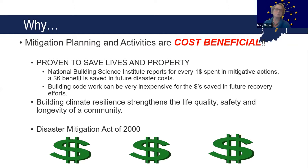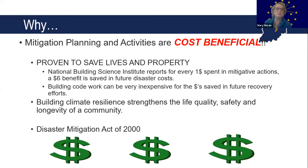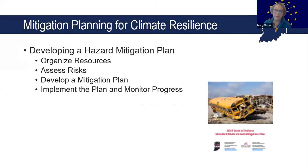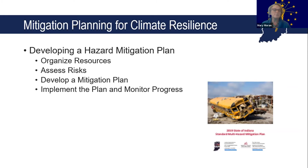As Janet mentioned, the Disaster Mitigation Act 2000 requires a local mitigation plan to be approved by FEMA to receive post-disaster recovery funding. It also requires the state of Indiana to have a state hazard mitigation plan. Both these plans are good for five years. How you develop a hazard mitigation plan involves four steps: organize your resources, assess your risk, develop your mitigation plan, and then implement your plan and monitor its progress.